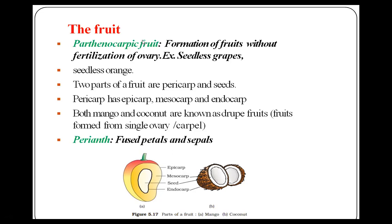Examples of parthenocarpic fruits include seedless grapes — grapes that do not have seeds inside — and seedless oranges. All fruits that do not contain seeds are classified as parthenocarpic fruits.